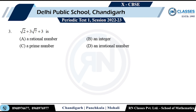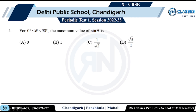Question 3: Is √2 + 3√7 + 3 rational or irrational? Obviously it is an irrational number. A different sort of irrational number has been added, so the addition has to be irrational. If you want to prove it you can use the method of contradiction, but this is an objective type question and it is clearly irrational.